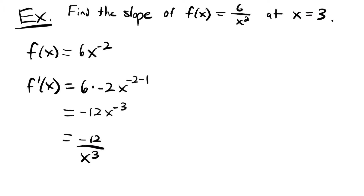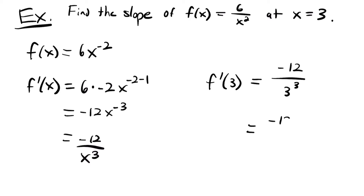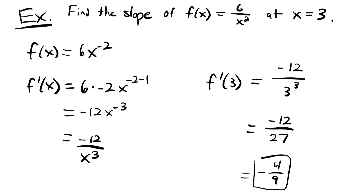That's our derivative for this function. Now we want to know the slope at a particular point, so we'll plug that point into our derivative. f prime of 3 equals negative 12 divided by 3 cubed, because our x value is 3 and we're plugging it into the x in our derivative, which is cubed. That equals negative 12 divided by 27, and we can reduce this to negative 4 ninths because each term has a factor of 3. So this is the slope of our function at x equals 3.